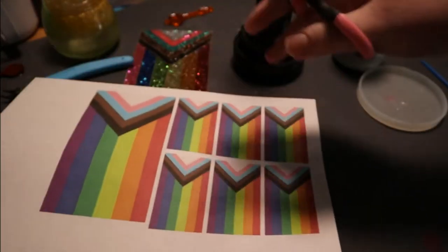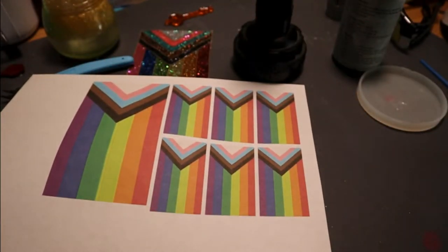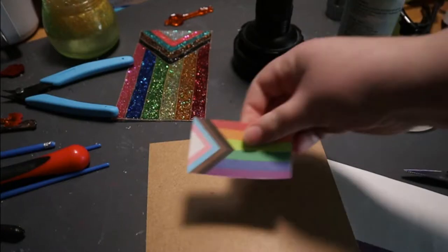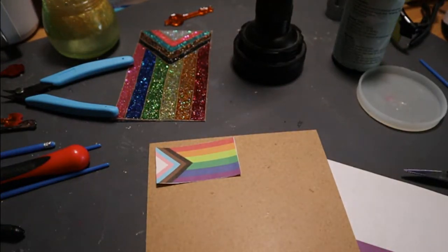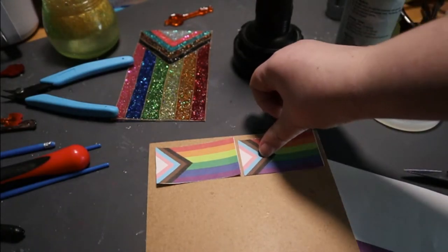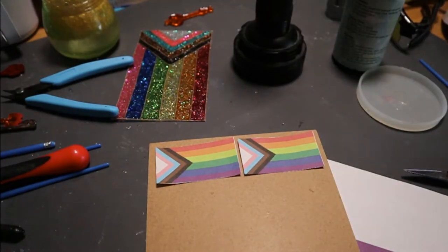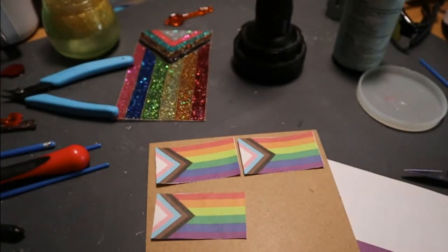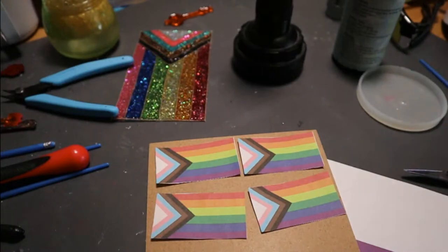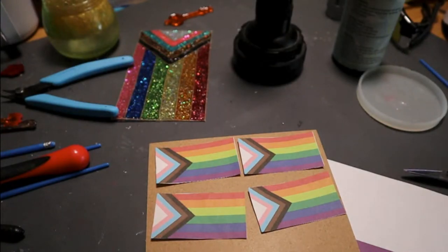First you're going to want to print out the flag that you want to make. I chose the Daniel Quasar flag, but this would work for any of the sexuality-specific flags too. Cut the flag out. It doesn't need to be perfect. This is just going to be a guide for where to put the wire later. One quick note: for a keychain size on this particular flag, I wouldn't go any smaller than one and a half by about two inches. The diamond parts just get too narrow and the resin has trouble filling it completely.